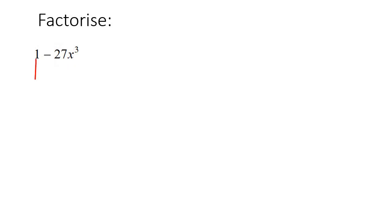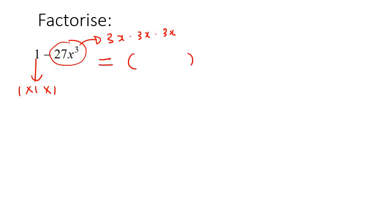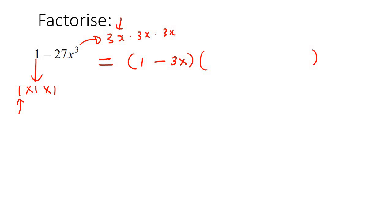For example, I know that this is the same as 1 times 1 times 1, and I know that this is the same as 3x times 3x times 3x. So what you do is you make a small bracket and a bigger bracket. In the small bracket, you're going to take these numbers — so 1 and 3x — and put a negative between them, because this is a negative. If it was a plus, you would use a plus.